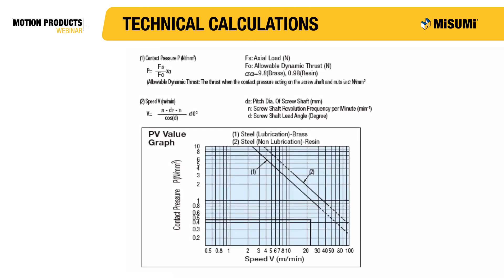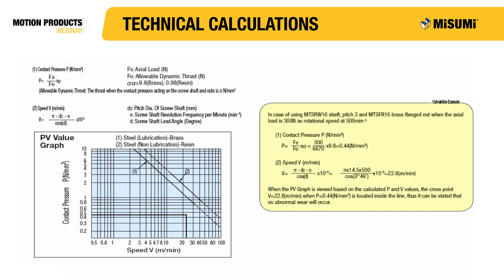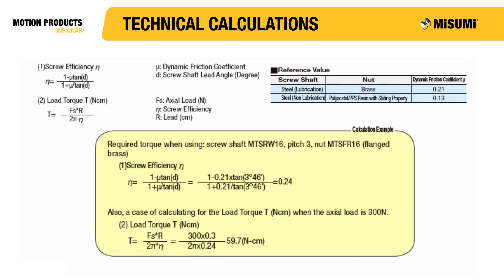Listed here are some useful technical calculations for lead screws. The two important values to pay attention to are the pressure, P, and the velocity, V. Once these values are calculated, a position in the PV graph can be determined. If the PV position is below the relevant curve, then no abnormal wear should occur in operation. For example, using an MTSRW16 shaft and an MTSFR16 brass nut under operating conditions of 300 Newtons axial load at 300 RPM, the numbers give a value of P = 0.44 N/mm² and V = 22.8 m/min. Locating this point in the graph reveals that no abnormal wear should occur.